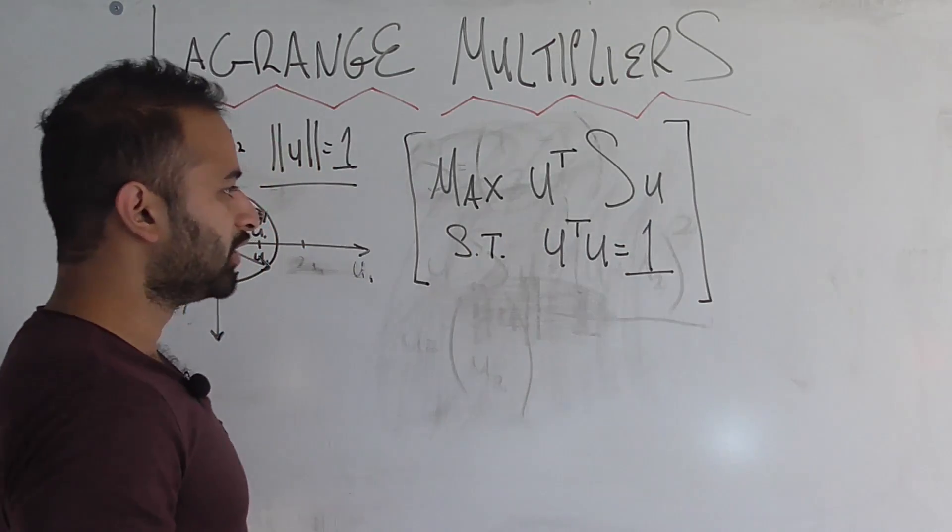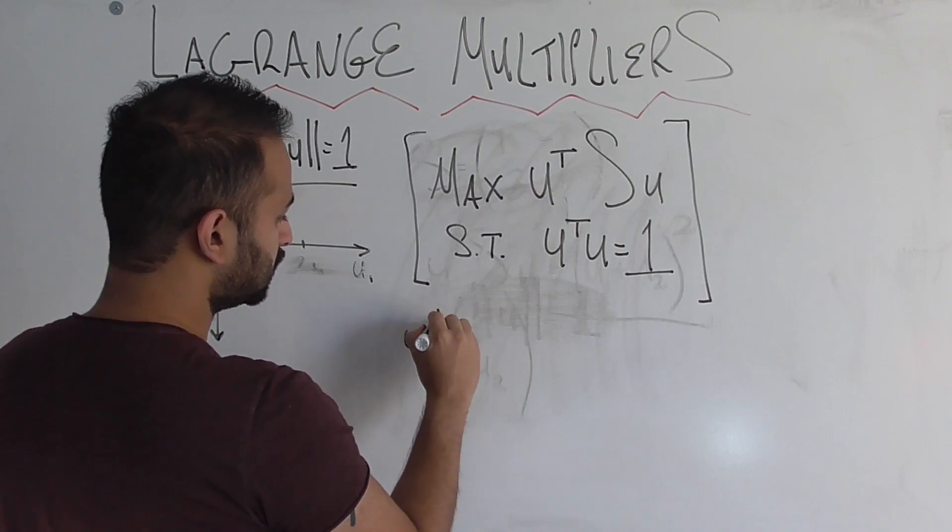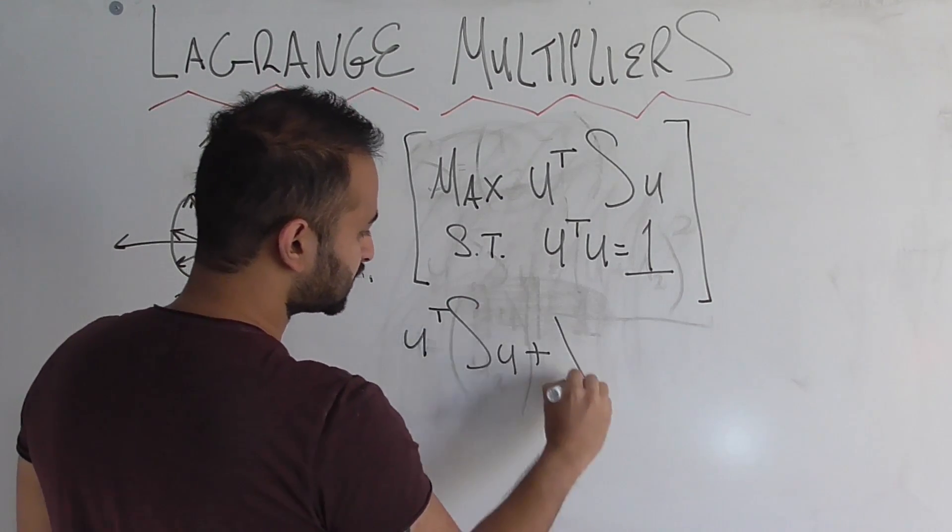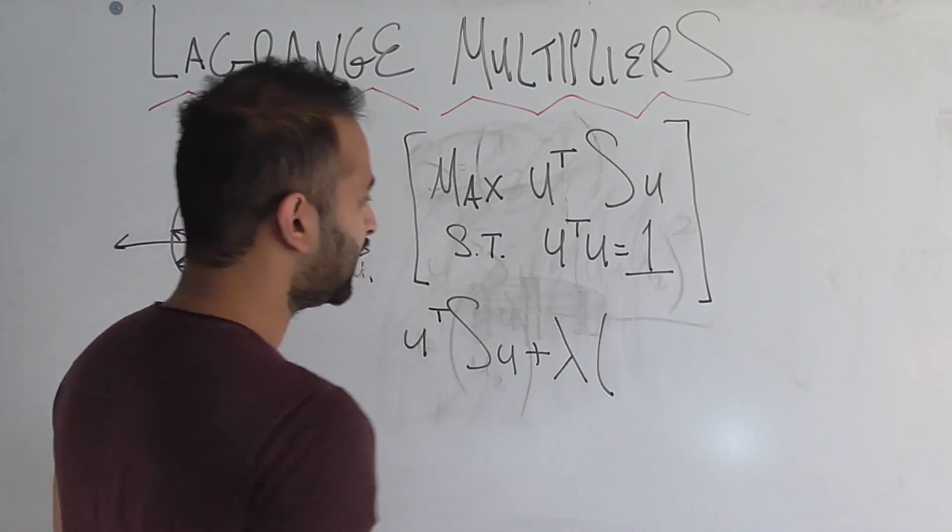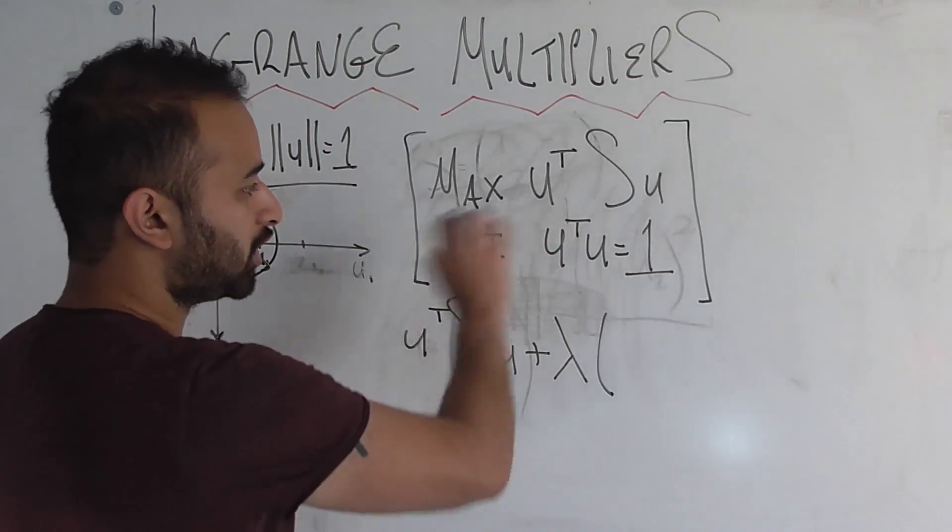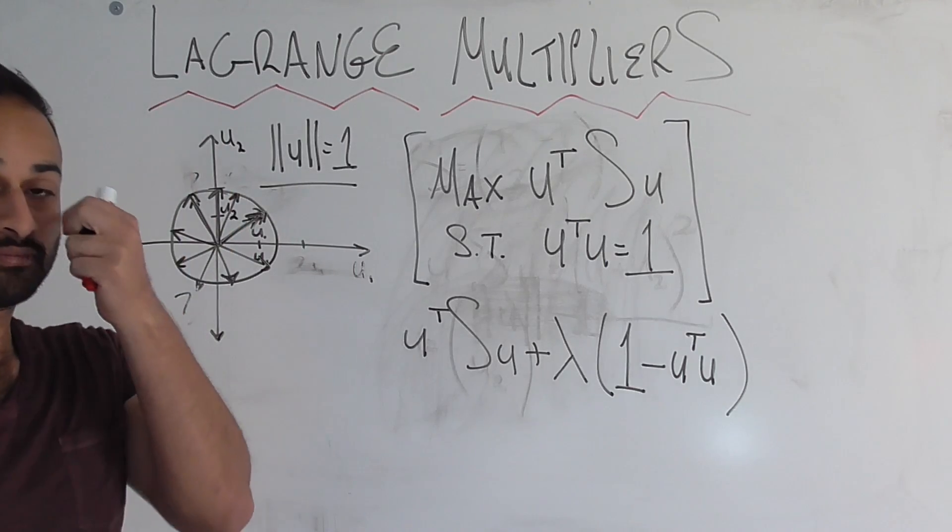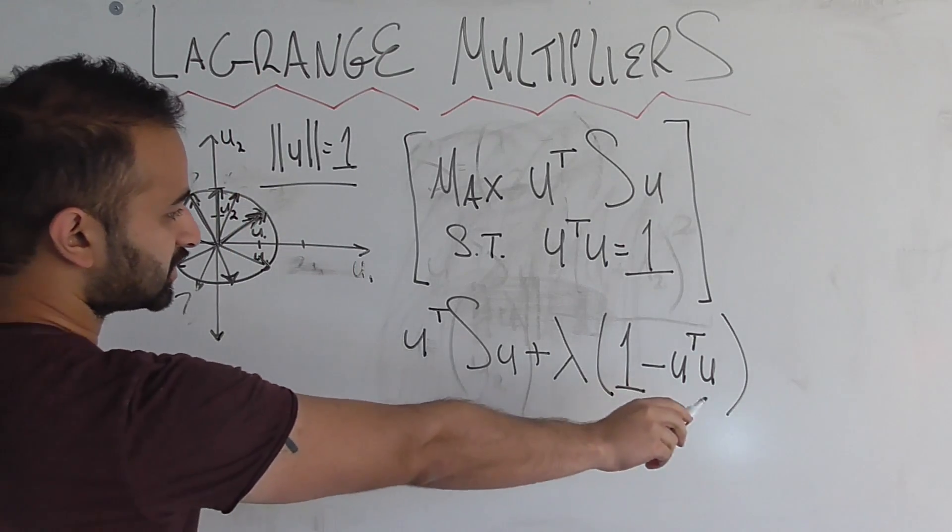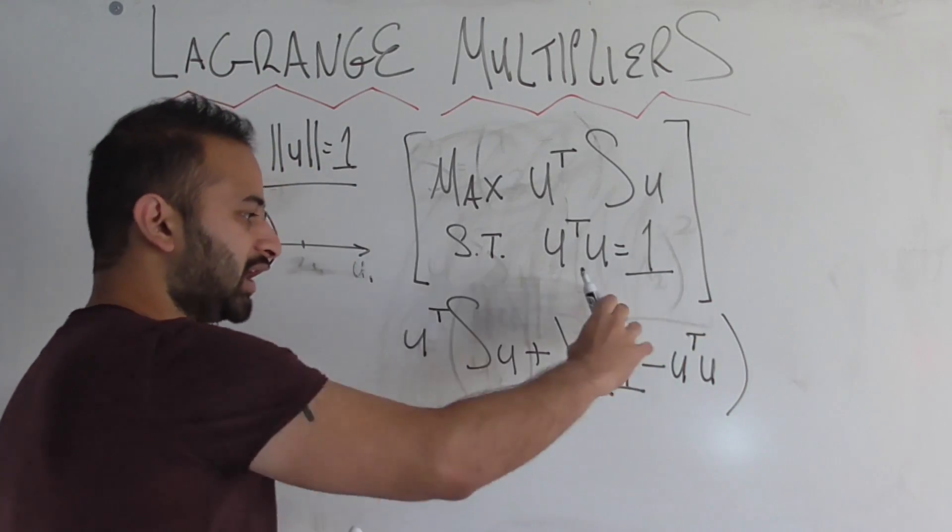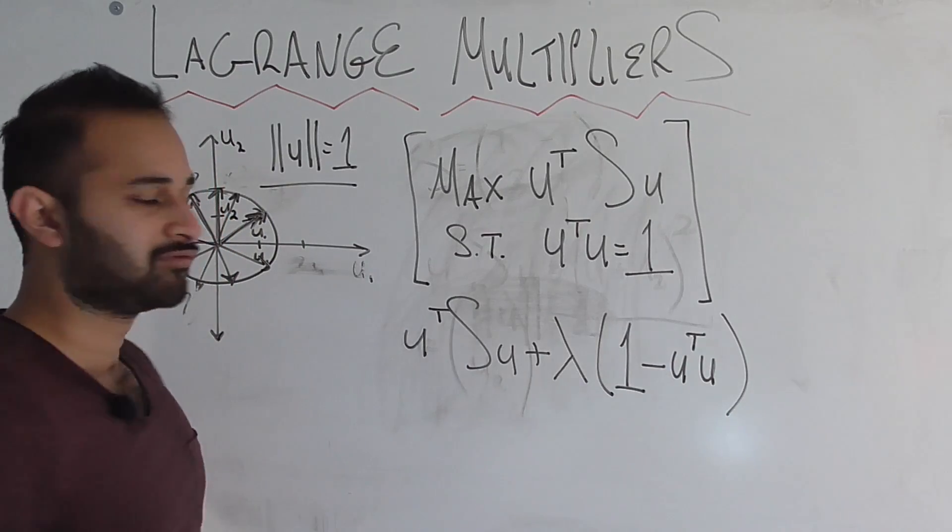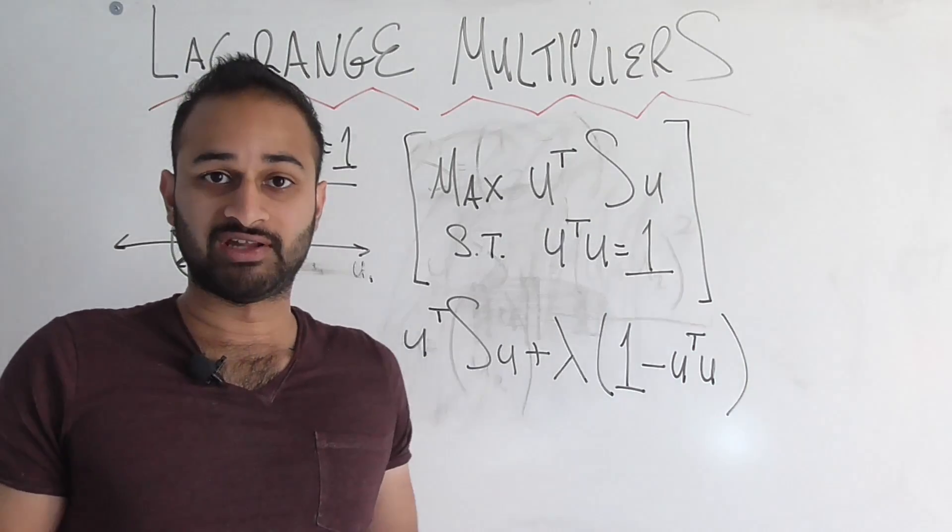Now, here is how you actually use a Lagrange multiplier. You go ahead and write your objective function, the function you're trying to maximize or minimize, U transpose SU. You do plus lambda, lambda being the actual Lagrange multiplier itself. And then you go ahead and take your constraint, move everything onto one side of the equal sign. So we get 1 minus U transpose U. So this is our new function. And we basically treat this as an unconstrained problem. We have already internalized the constraint. We have taken the constraint and put it into this new formula, so that now we can go ahead and just operate on this guy, like we would a normal calculus problem. We just take the derivative and set it equal to zero.